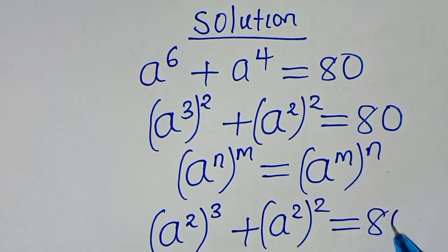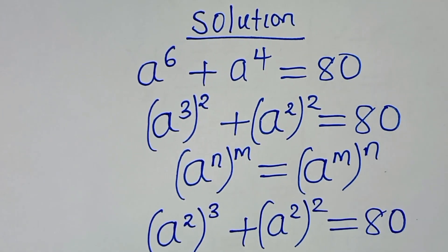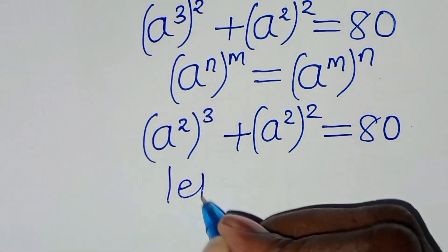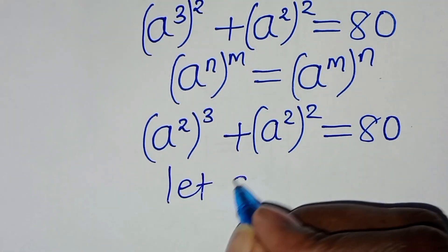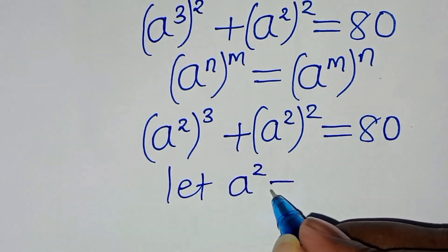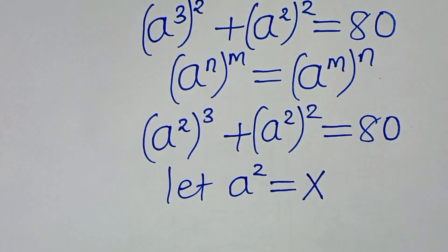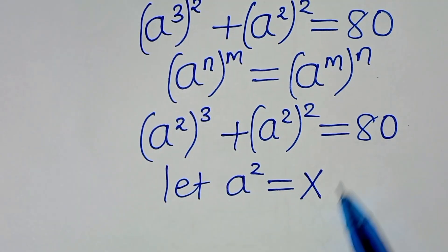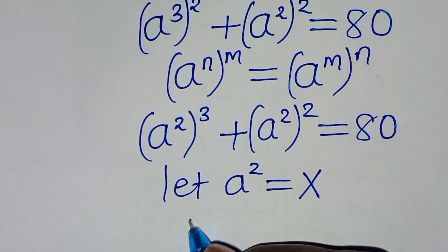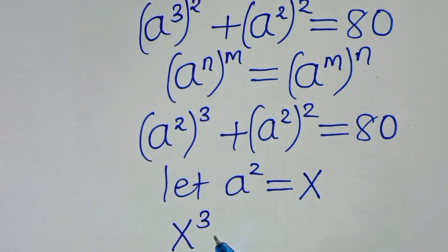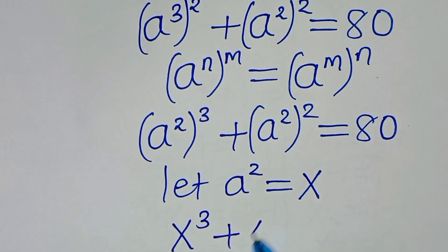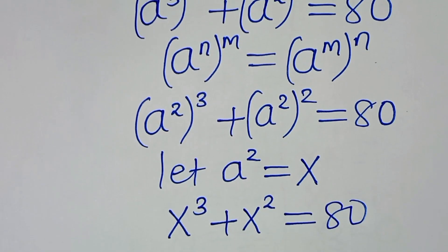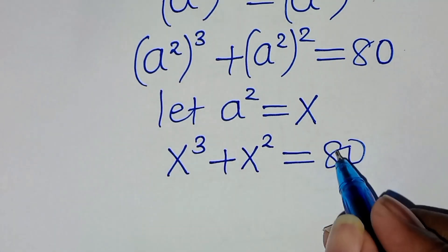This is equal to 80. The next step: we can let a to the power of 2 be equal to x. Substituting a squared with x, we have x to the power of 3 plus x to the power of 2 equals 80.